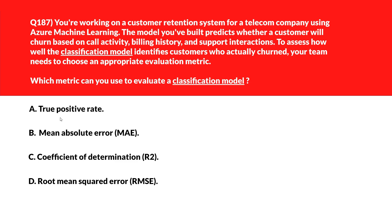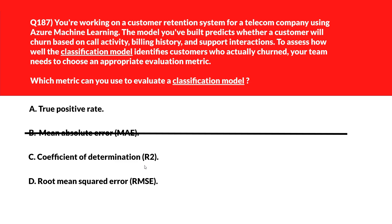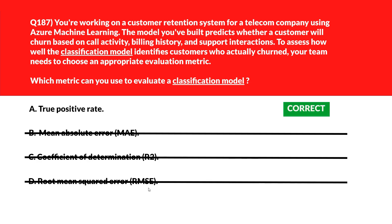This question is about classification model metrics. Option A says True Positive Rate — true positive rate measures how many actual positive cases were correctly classified, so let's keep it. Option B says Mean Absolute Error (MAE) — MAE calculates average errors for numeric prediction in regression tasks, so it's incorrect. Option C says Coefficient of Determination — this quantifies explained variance in regression models, so it's wrong. Option D says Root Mean Squared Error — RMSE measures error magnitude for continuous outputs in regression models. We'll lock option A, True Positive Rate, as the right answer.